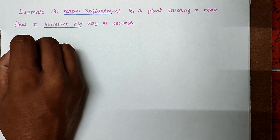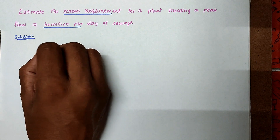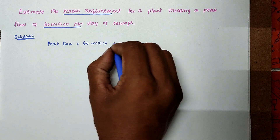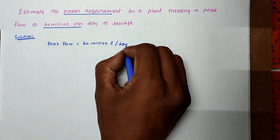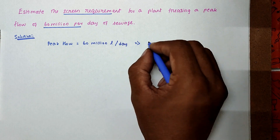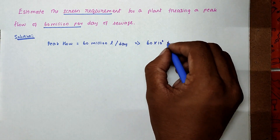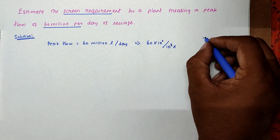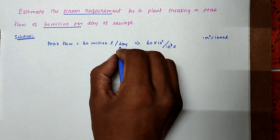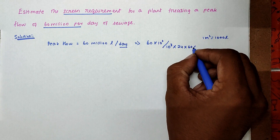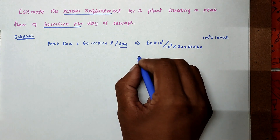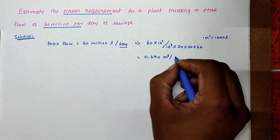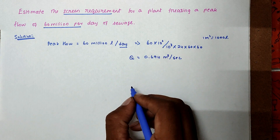The peak flow equals 60 million liters per day. We have to convert into cubic meters per second: 60 × 10⁶ divided by 10³ (since 1 m³ = 1000 liters), divided by 24 × 60 × 60 seconds. We get the value of 0.694 m³/s. This is the peak discharge Q.